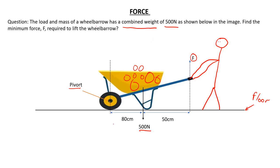The distance from the center of the wheel to where the entire weight is acting is 80 cm, and from the 500 N to where the force is being applied to lift the wheelbarrow is 50 cm. With this information, we can calculate the force required to lift the wheelbarrow.